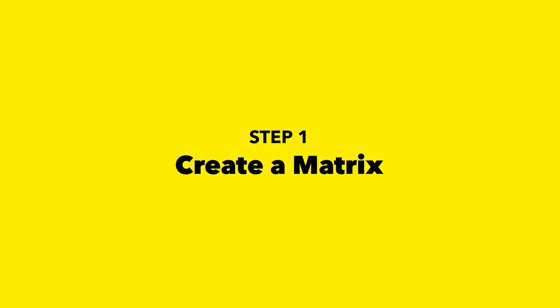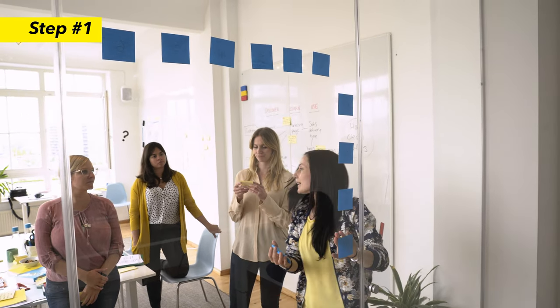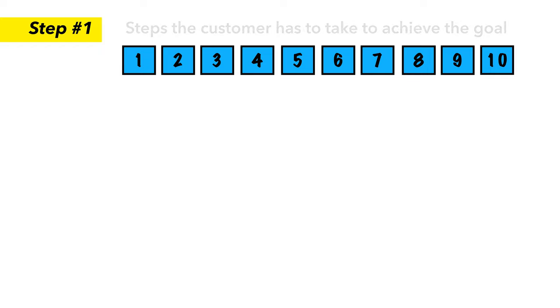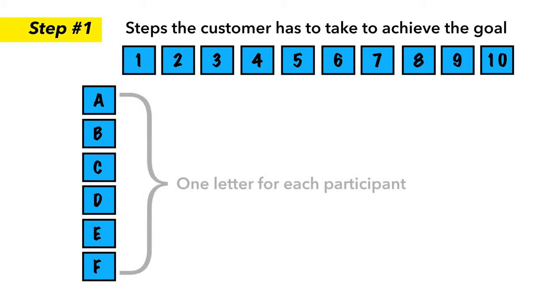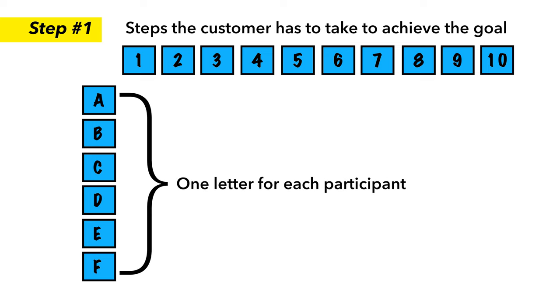So here's how you run this exercise. First, you will need to create a matrix. For this, we recommend taking your blue sticky notes and sticking them up on the wall in a horizontal and vertical axis. In the horizontal axis, you need to put the steps each customer has to take to achieve the goal. And in the vertical axis, just put the letters of the alphabet, depending on how many participants you have.